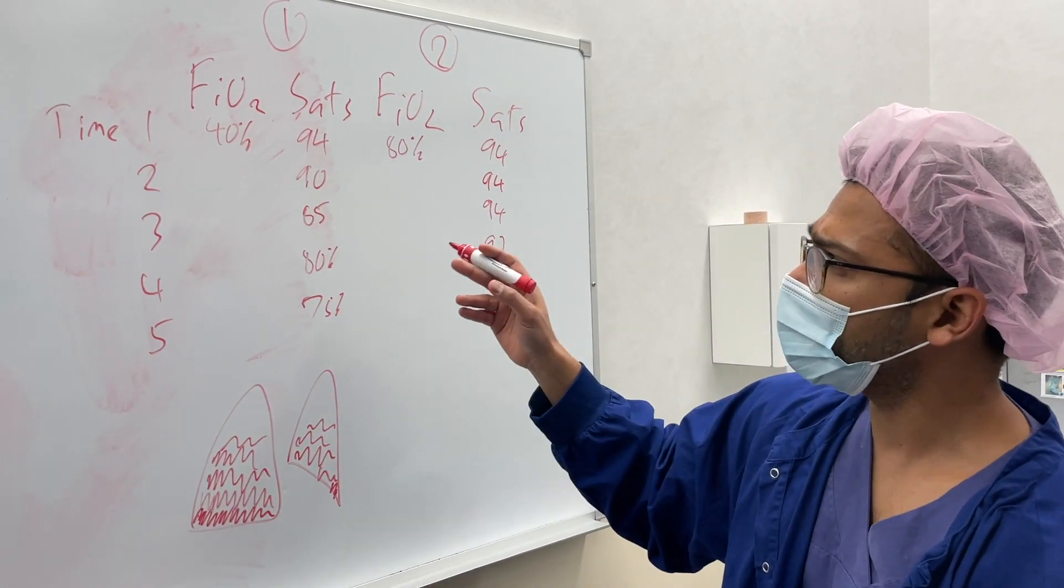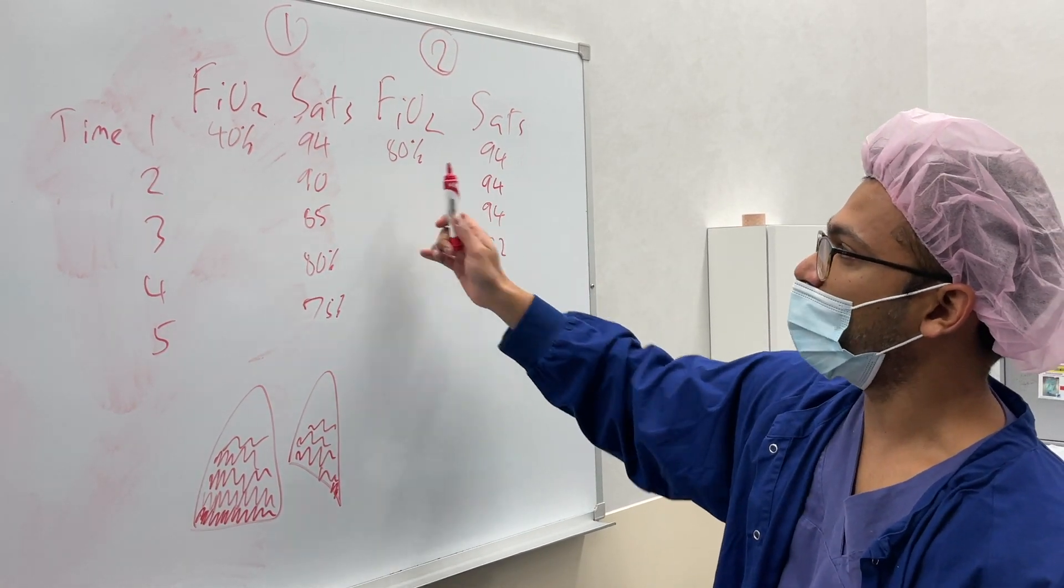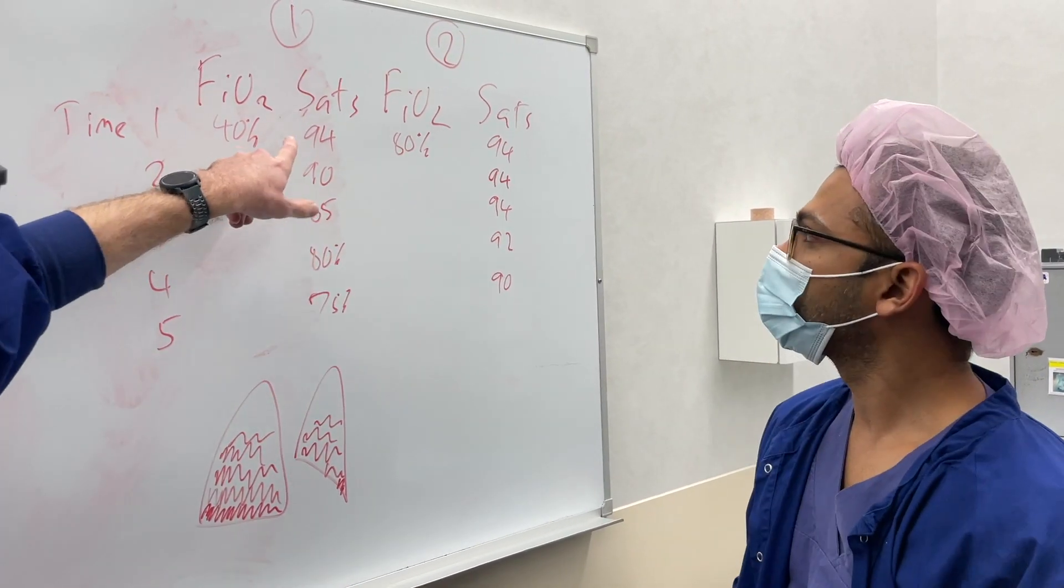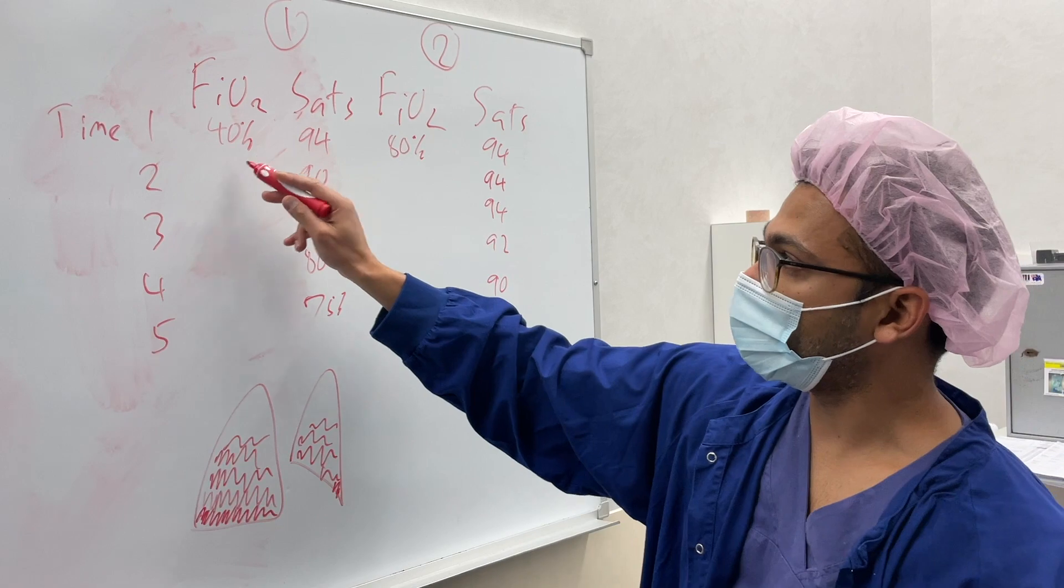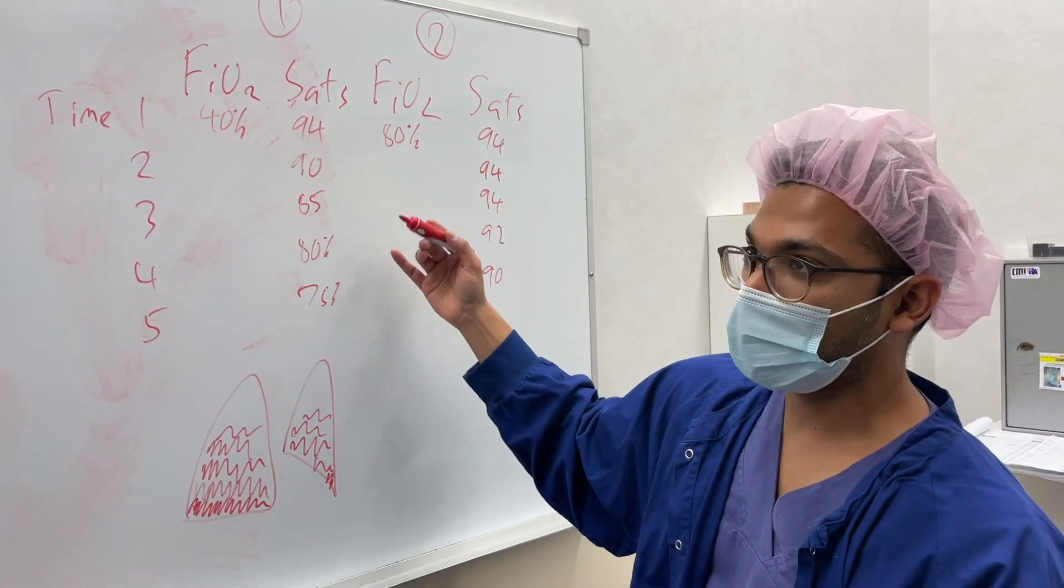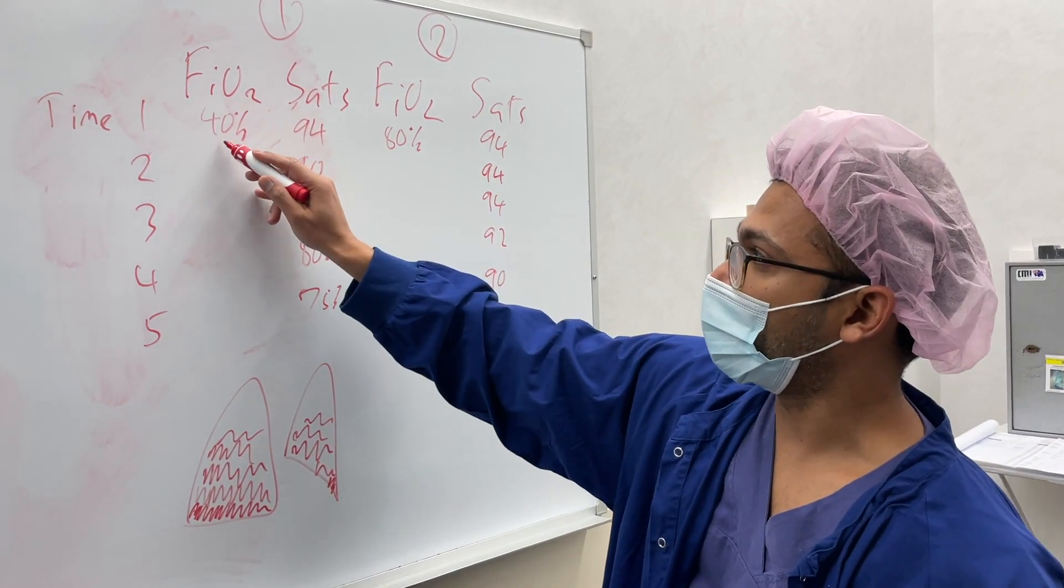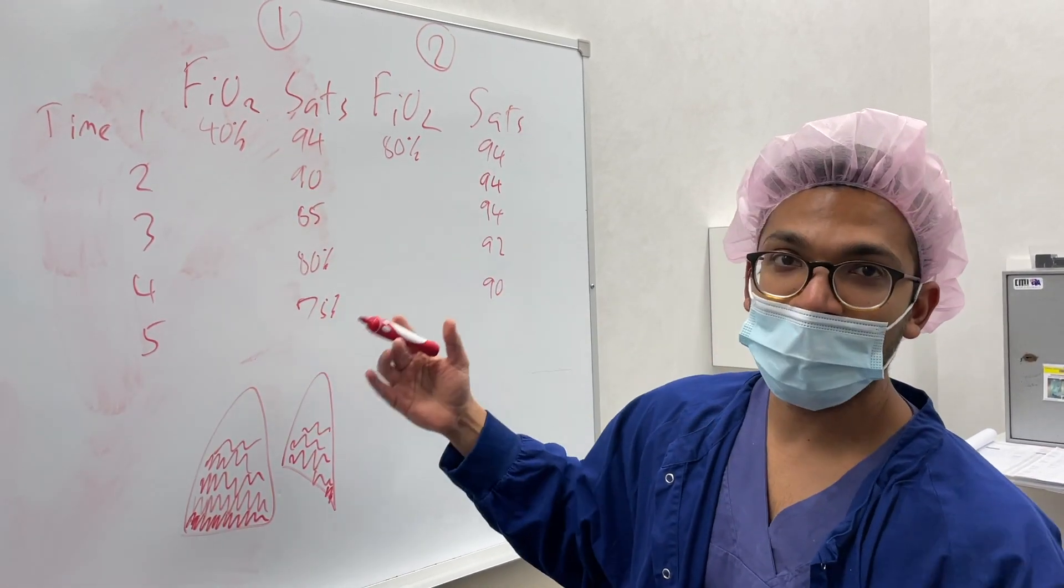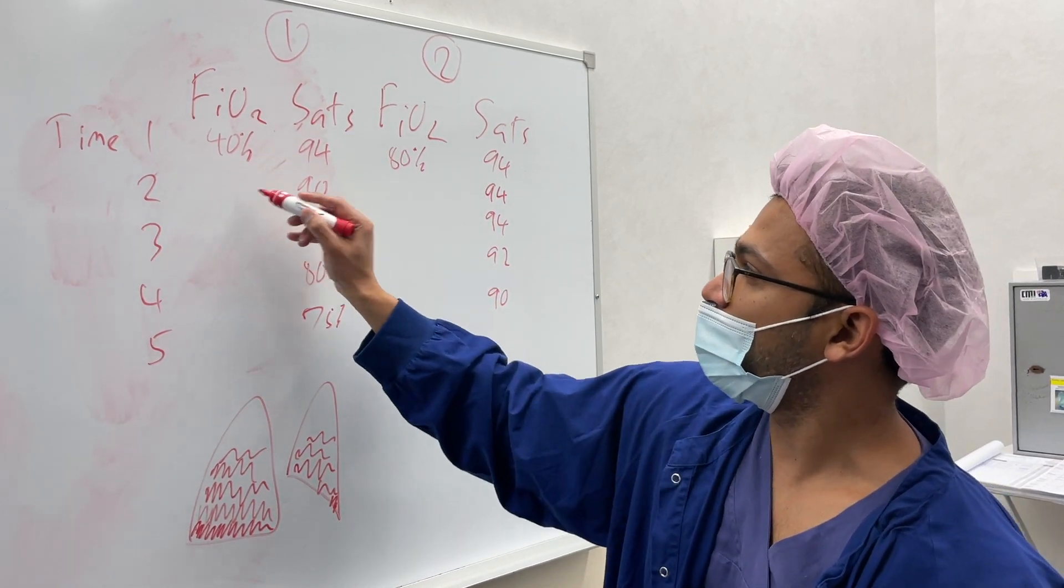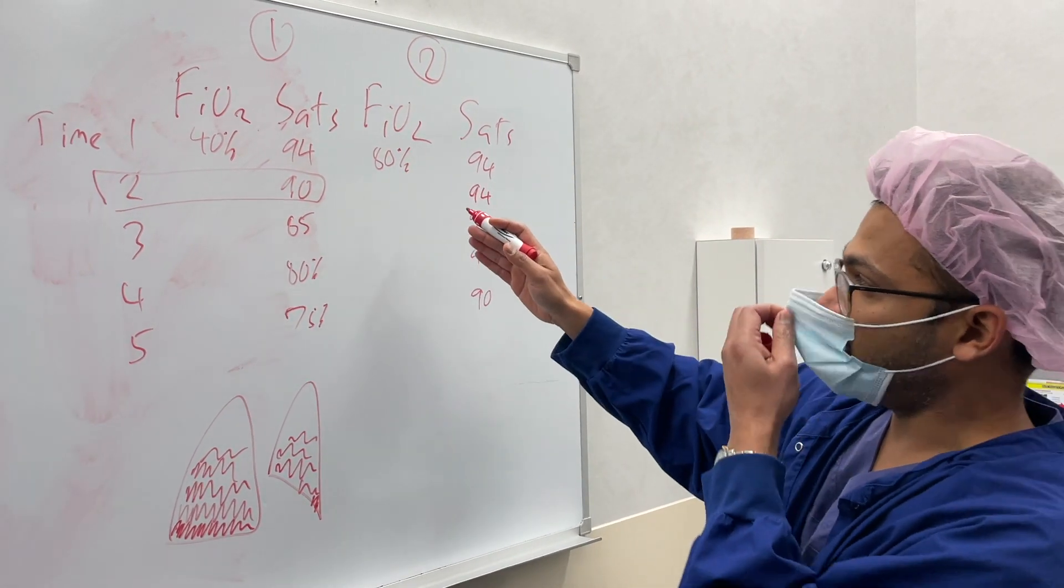So as the evolving process gets worse, my lungs get worse and suddenly my Sats are dropping in these two situations. What's interesting is Andrew, when would you start treating this problem? Around here for this one - so FiO2 40% at Time 2, as soon as it drops suddenly you start treating. You'd increase your FiO2, you'd have lots of time because now I've put my FiO2 straight to 100% and I'll have say 5-10 minutes before the lungs get really worse. I'll start treating straight away and I'll identify it at this point here at Time 2.